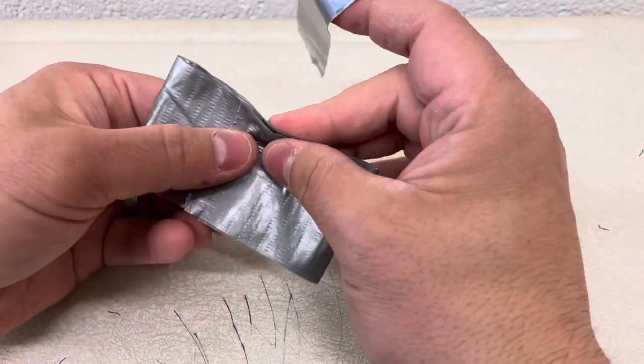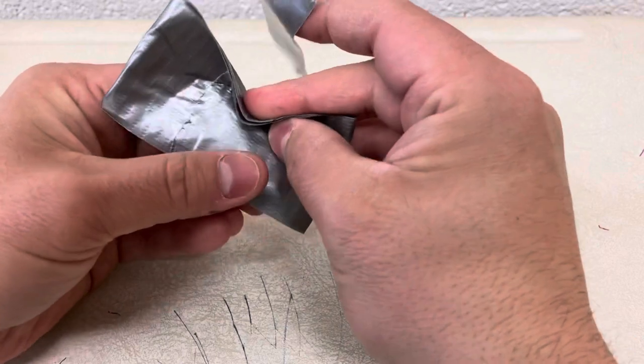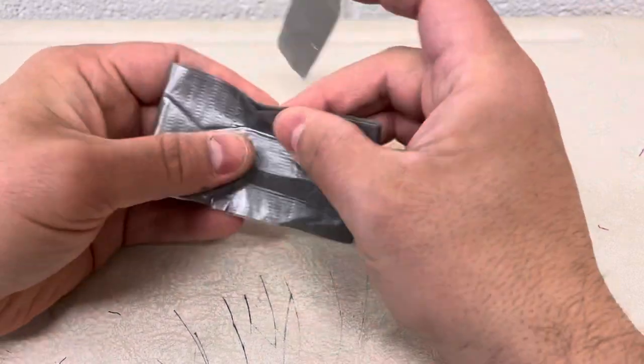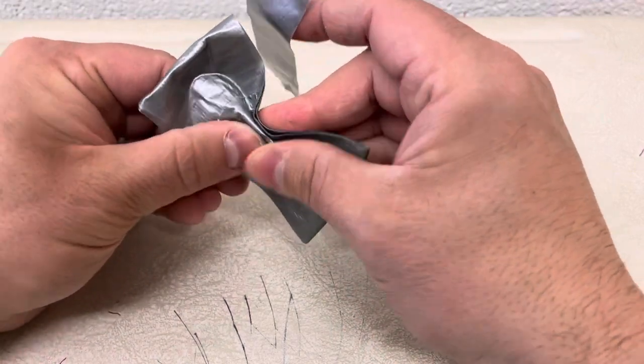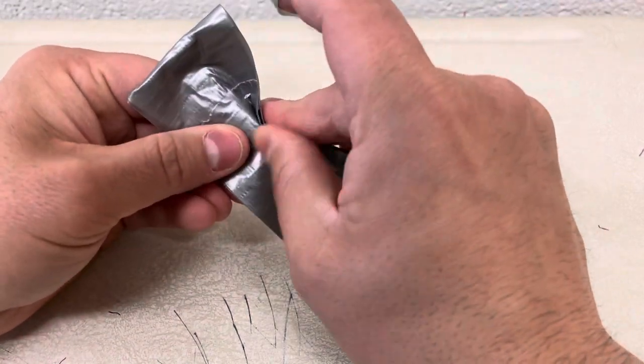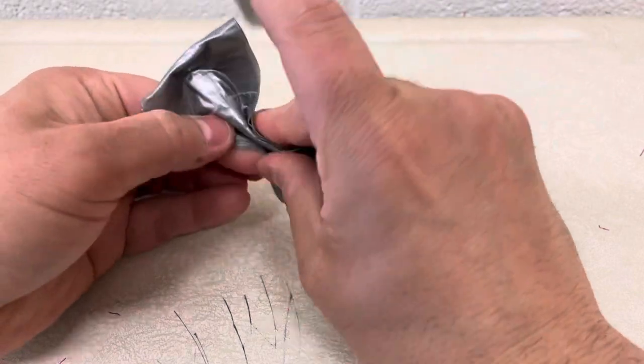So fold it this way, then fold it that way, and this way again. You want to fold it almost like a zigzag pattern, like a fan pattern, essentially like a paper fan, just like that. Folding it sort of like that: down, up, down.